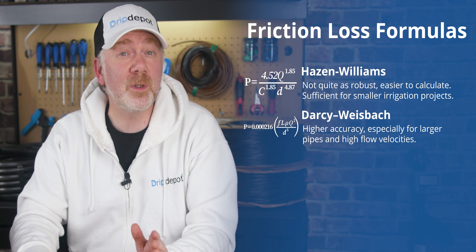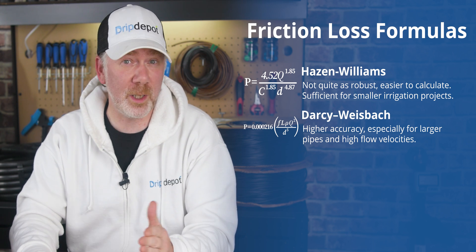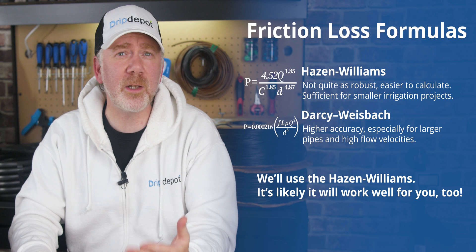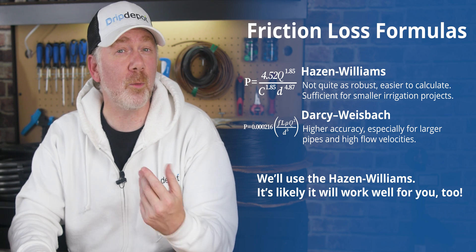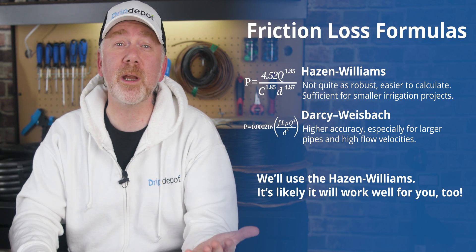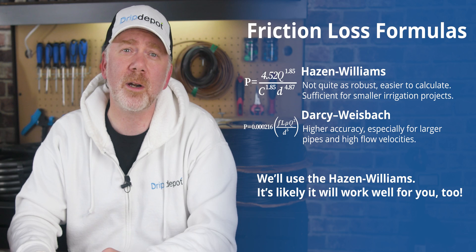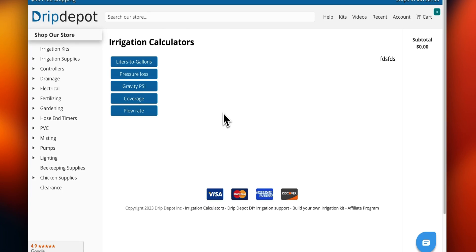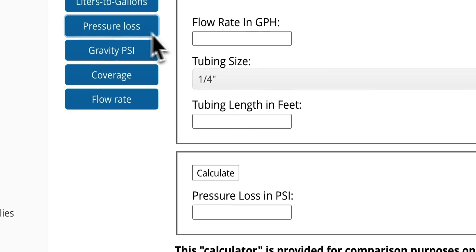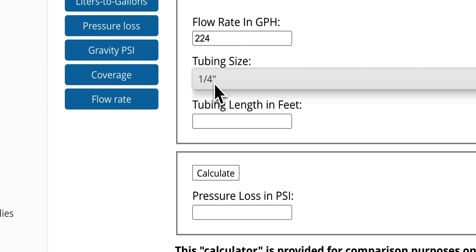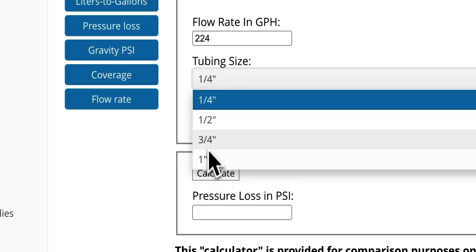The Hazen-Williams formula isn't quite as robust in that it is limited to only water. However, for irrigation purposes, that's all we're really concerned about. Using our online friction loss — or as it is called on our website, Pressure Loss Calculator, linked below — we can see how much friction loss will be suffered in multiple diameters of our poly tubing.